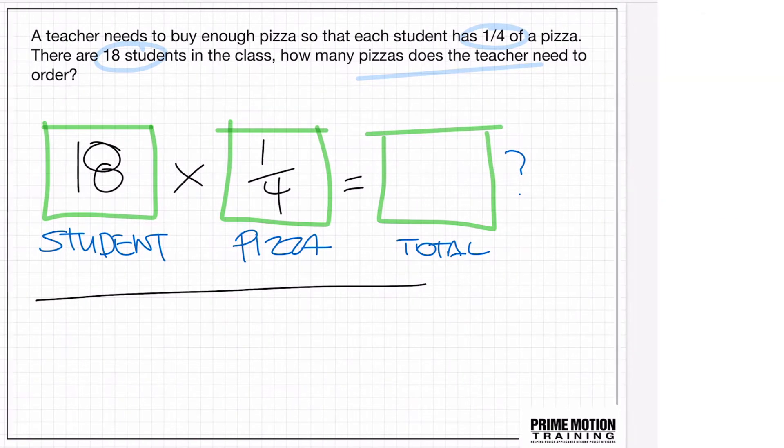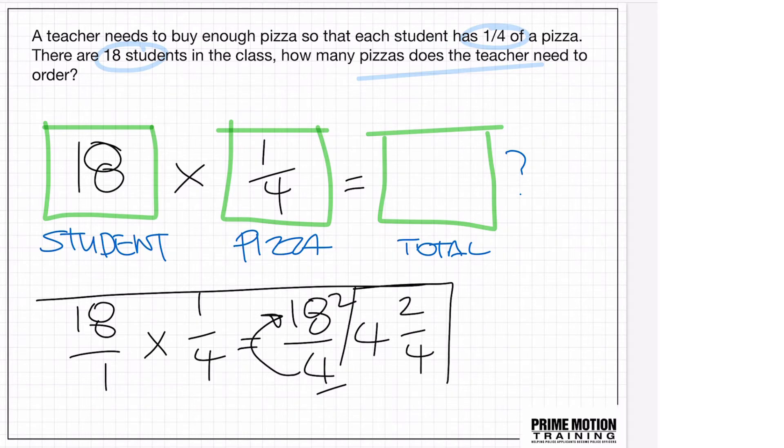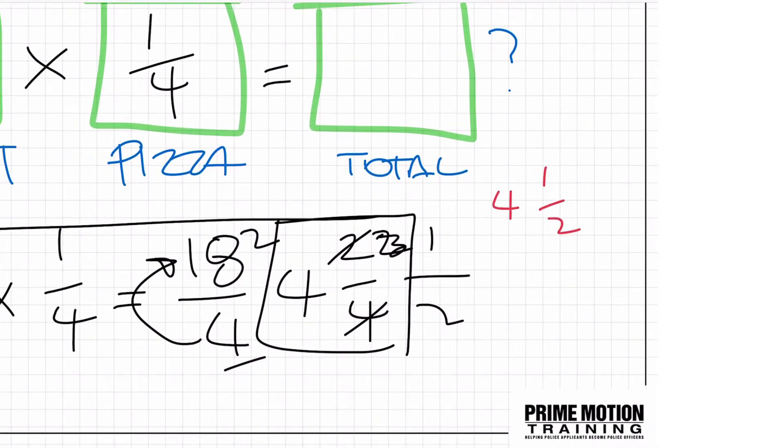Now, to do that, just really quickly, because I think most people are probably comfortable with this, but really quickly, 18, we can put that over 1, and then we do our multiplication, 1 over 4, and we simply multiply across, so 4 at the bottom, 18 on top, improper fraction, we can't stop there, we have to divide the 4 into the 18, how many times will it go? It will go 4 times, I'll have 2 left over, I have 2 fourths left over. 2 fourths, can I simplify that any more? Yes, 2 goes into itself once, and it goes into 4 twice, so now we end up with 4 and a half pizzas.